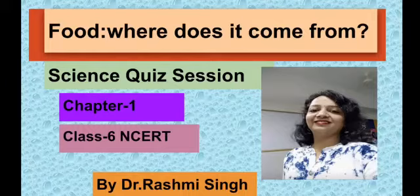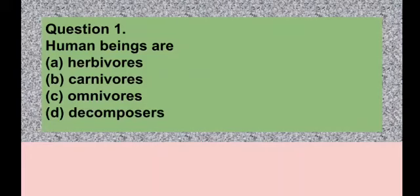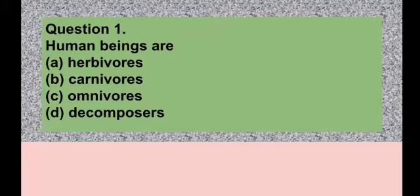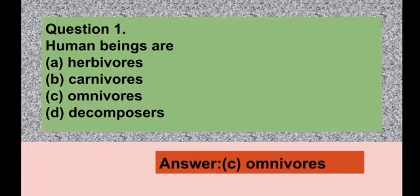Question number one: Human beings are — option A herbivores, option B carnivores, option C omnivores, option D decomposers. Herbivores are plant eaters, carnivores are flesh eaters, omnivores can eat both, and decomposers feed on dead and decaying matter. So option C, omnivores, is the correct answer.